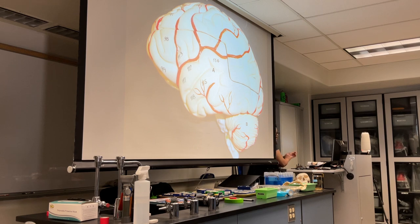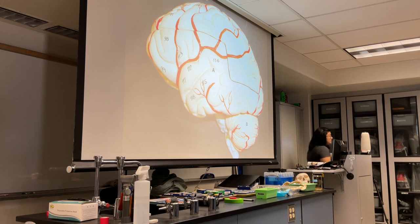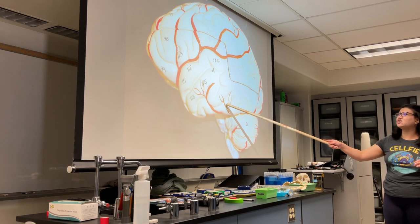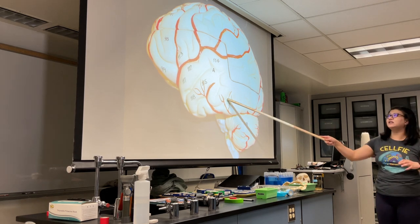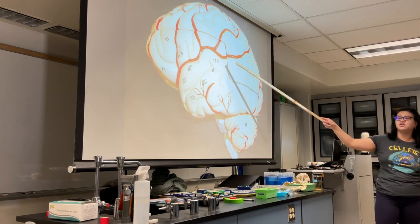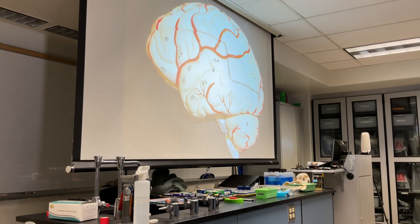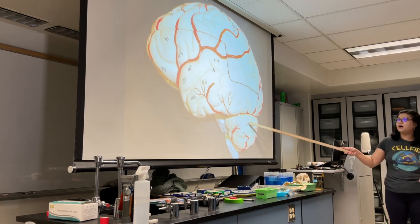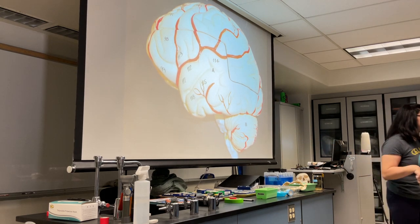Look at your brains now. There is a list of structures at the end of your worksheets. From this view, you're looking at the two largest parts of the mammalian brain. The largest portion is this big round structure called the cerebrum, and most higher-order thinking functions are controlled by the cerebrum.